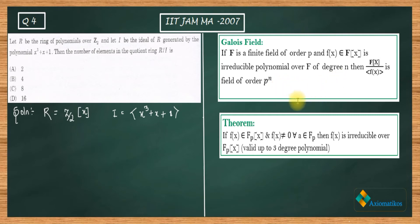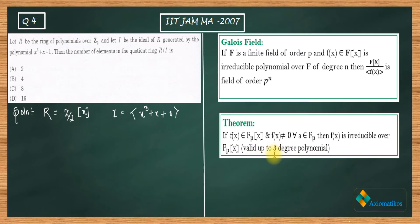The order of the Galois field is p to the power n, where p is the order of the base field. The second theorem states: if f(x) belongs to F_p[x] and f(x) is a non-zero polynomial, then f(x) is irreducible over F_p[x]. This is valid up to degree-three polynomials — meaning if f(a) is non-zero for all a in F_p, then f(x) is irreducible.